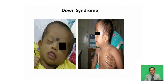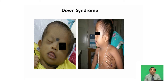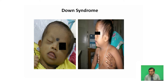Down syndrome is one of the most frequently occurring chromosomal disorders, with a frequency of 1 in 700. It was first discovered in 1866 by British physician Langdon Down. People with Down syndrome have typical clinical features such as a protruding tongue, flat nasal bridge, straight hair, brachycephaly, and they suffer from severe mental retardation.